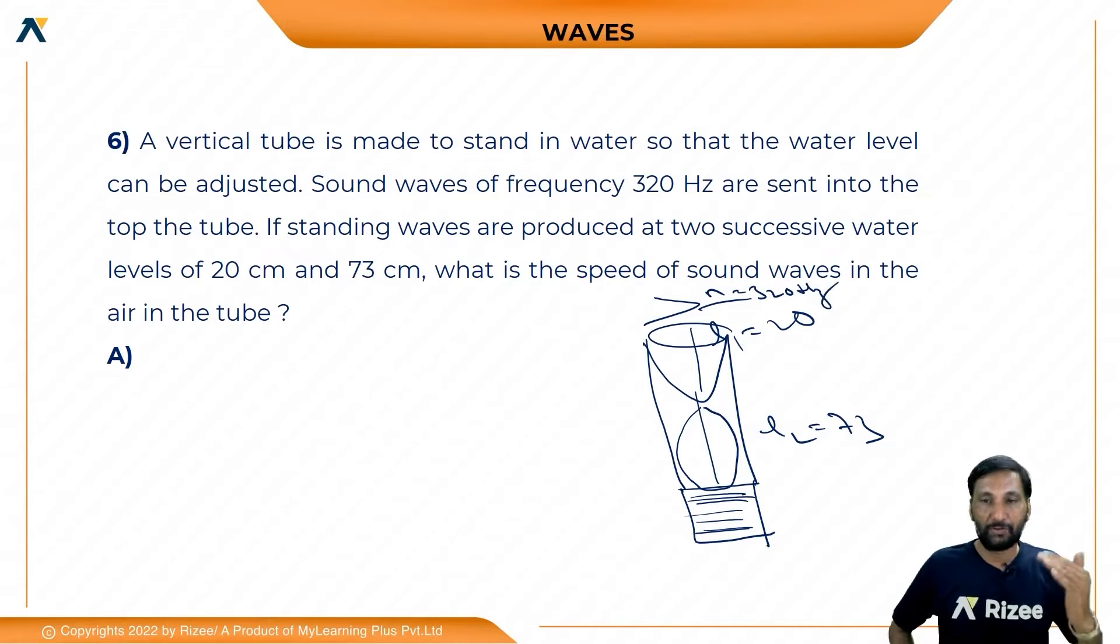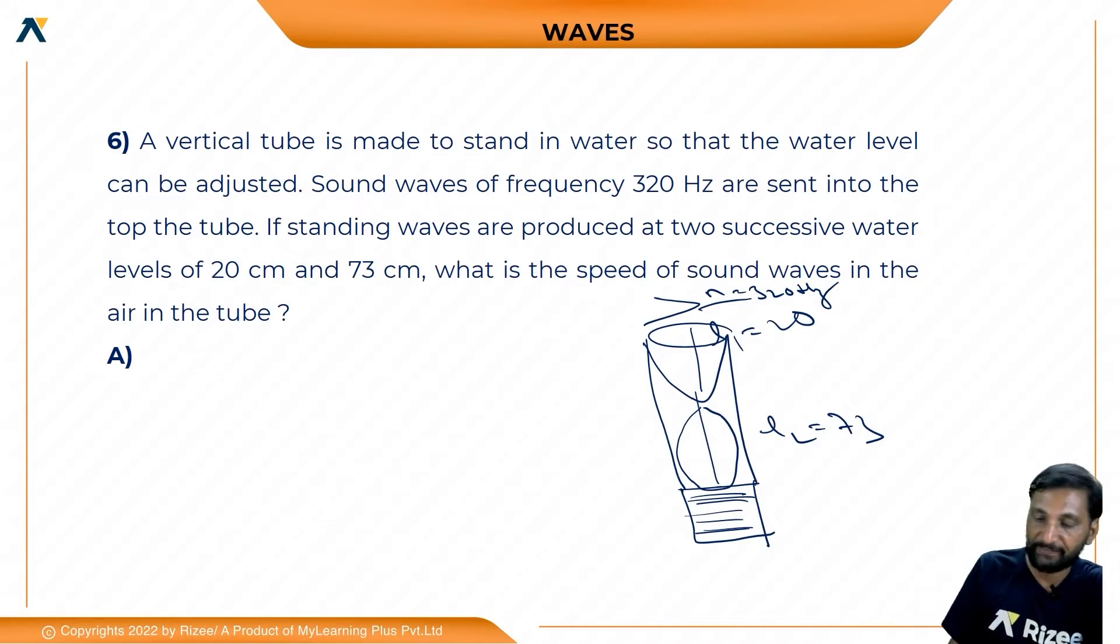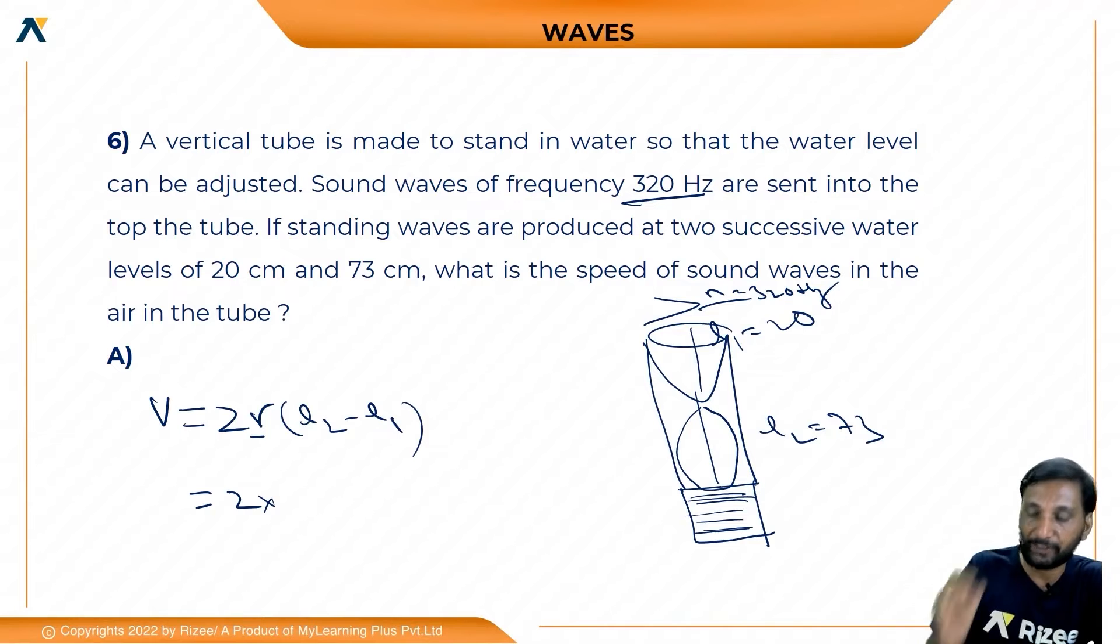You got it first at 20 cm, next you got it at 73 cm. So we can find it using the general formula to find speed or velocity: v = 2 into nu of L2 minus L1. So we use this frequency. What is the frequency? 320.